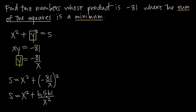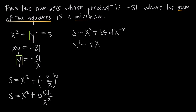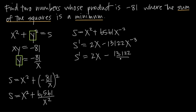Now that it's simplified and in terms of one variable, our next step is to take the derivative. First, let's move x squared in the denominator into the numerator using rules of exponents, giving us s equals x squared plus 6561x to the negative 2. Taking the derivative, s prime equals 2x, and 6561 times negative 2 gives negative 13122, then by the power rule we subtract 1 from the exponent: negative 2 minus 1 is negative 3. Rewriting with positive exponents, s prime equals 2x minus 13122 over x cubed.